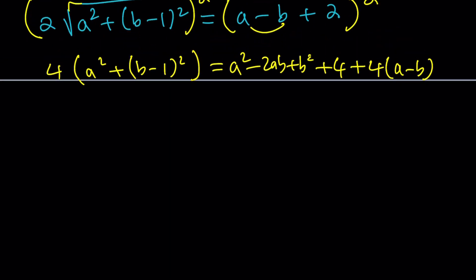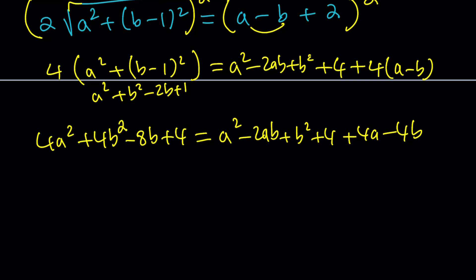Now we're going to go ahead and simplify everything. This is going to become A squared plus B squared minus 2B plus 1. I'm going to distribute to 4. 4A squared plus 4B squared minus 8B plus 4 equals some other stuff is going to cancel out, which is what's cool about it. A squared minus 2AB plus B squared plus 4 plus 4A minus 4B. Awesome.